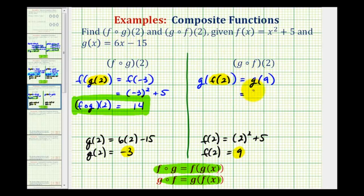So we have 54 minus 15, which is equal to 39. So g of f of 2 is equal to positive 39.